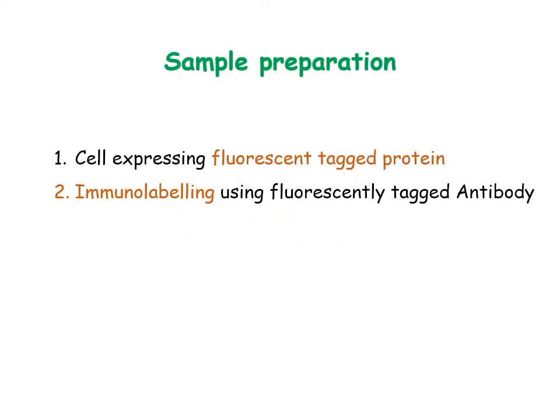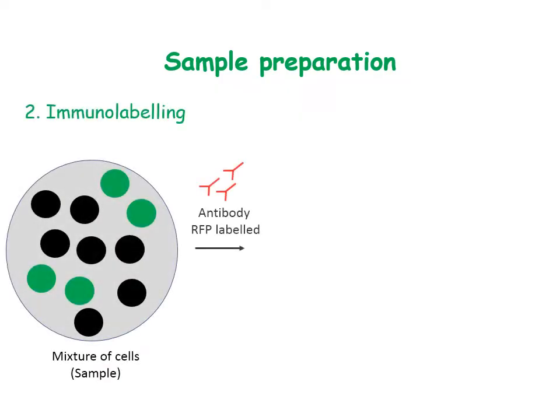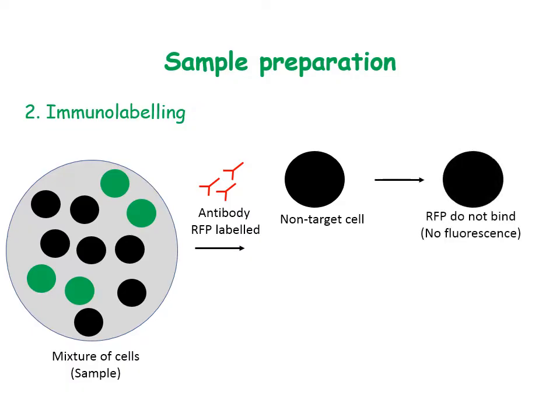For analysis through flow cytometry, the target cell must express a fluorescent protein or be immunolabelled. For more information on cells expressing fluorescent protein, watch the video on GFP given in the description below. For immunolabelling, a fluorescently labelled antibody specific to the cell or the protein of interest is used. In this case, a mixture of cells are treated with RFP-tagged antibodies specific for target cell surface protein.